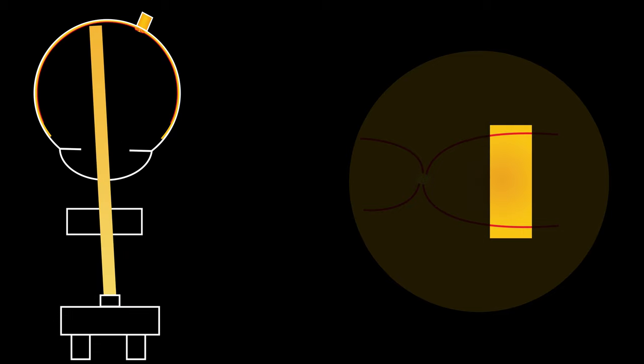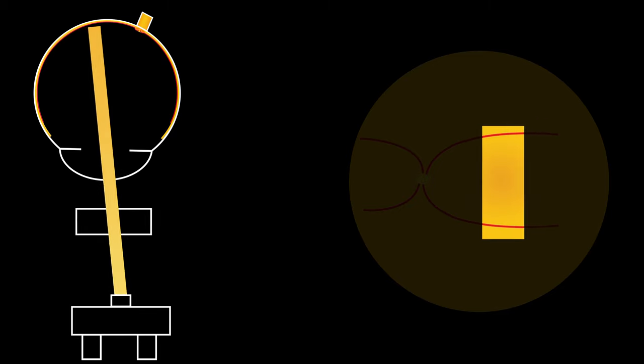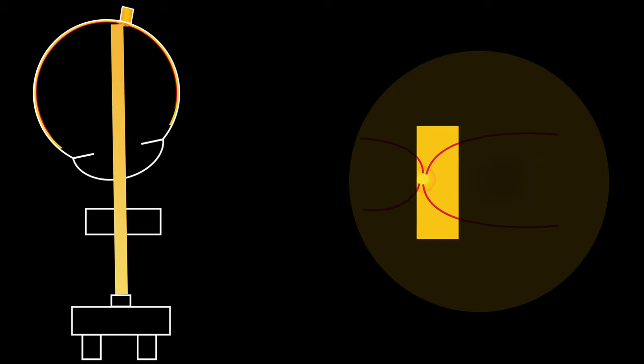To make matters worse, you have to constantly align three moving parts: the patient's eye, your indirect lens, and your slit lamp. And whenever you move one of them, the image you see changes in a counter-intuitive way.